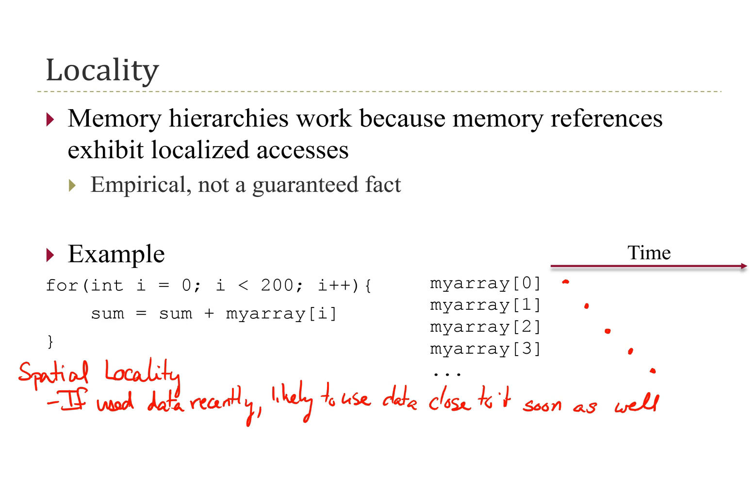In this example, we first accessed my_array[0], and then very soon after we also accessed things nearby it: my_array[1], 2, and 3. To exploit this type of locality, when we access some data we want to bring nearby data into the higher levels of the memory hierarchy along with it.